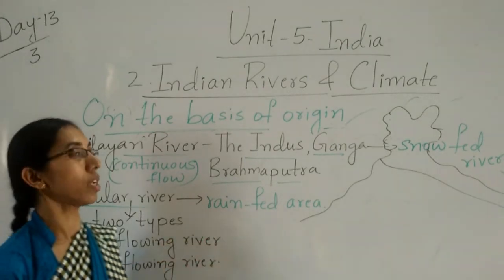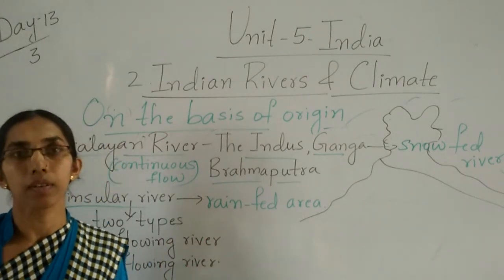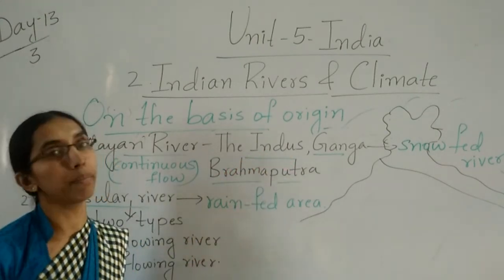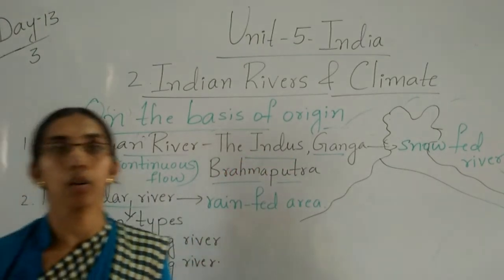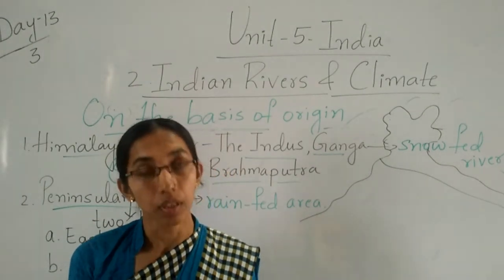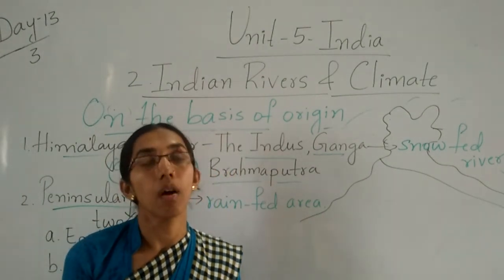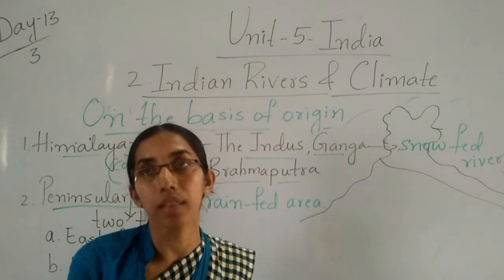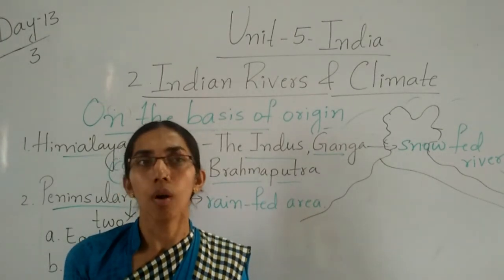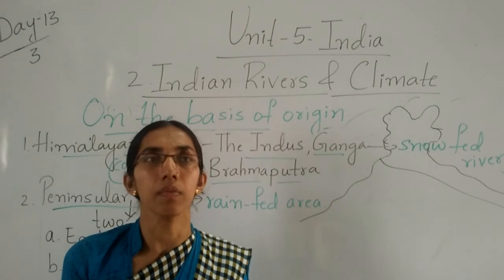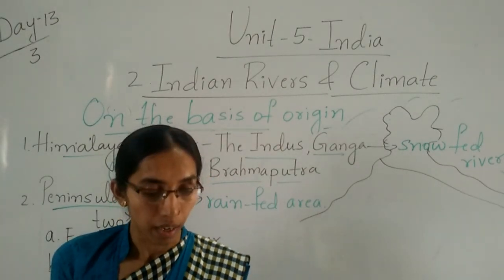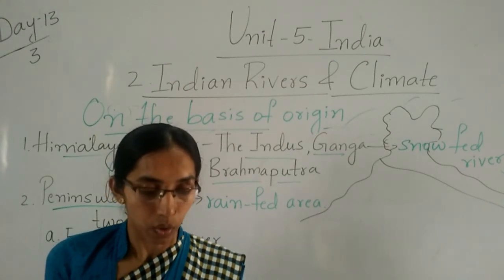In the next class, children, we will discuss in detail how Indus, Ganga, Brahmaputra, Mahanadi, Krishna, Godavari, Tapti and other rivers originate, and what are their tributaries and distributaries — all these things we will learn in detail in the next class.